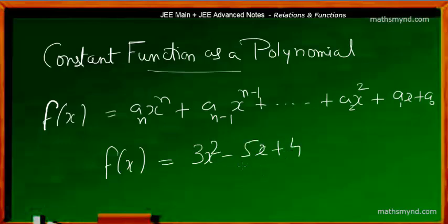In this case, the highest power to which the variable x is raised is 2, that is x squared. So it simply means this is a second degree polynomial, or we commonly call it a quadratic polynomial.